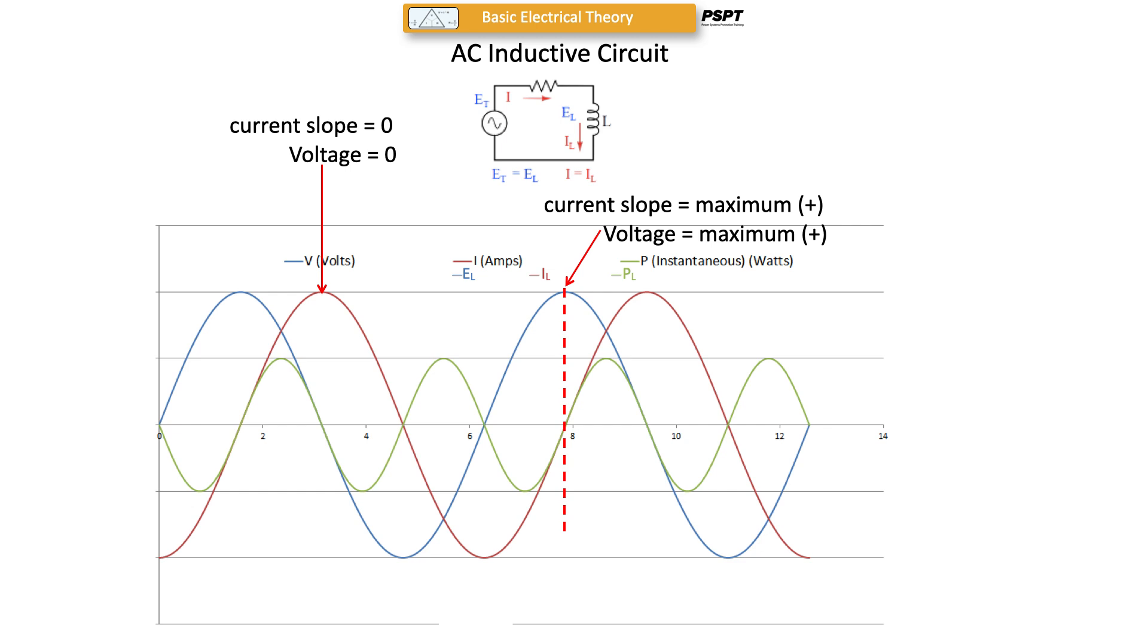Another zero point for the power is where the current slope may be a maximum and the voltage may be a maximum, but the current is zero, so the power is zero. And where the current slope is zero and the voltage is zero, then of course we have zero power.